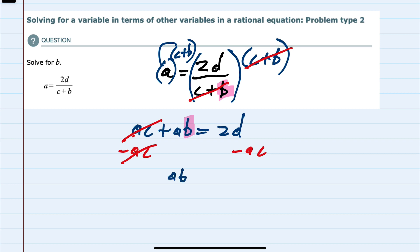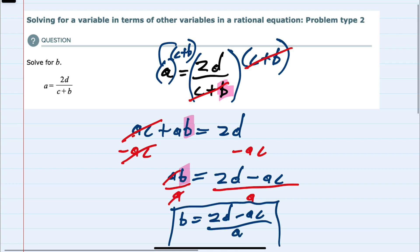leaving me with ab on the left-hand side. There are no common terms to combine on the right-hand side, so I'll just write it as 2d minus ac. We're closer to having the b by itself. Our last step is to get rid of the a by dividing both sides of the equation by a. Canceling gives us b on the left-hand side and the fraction 2d minus ac over a on the right-hand side.